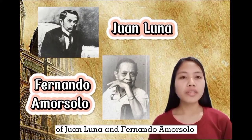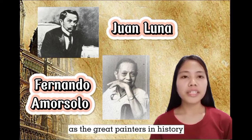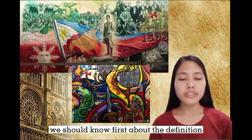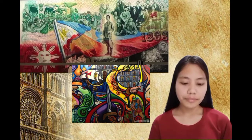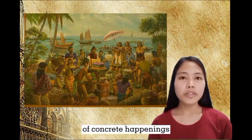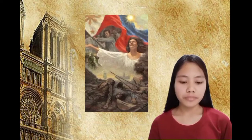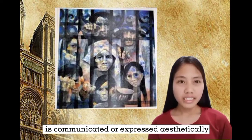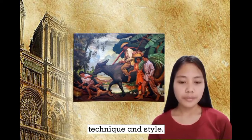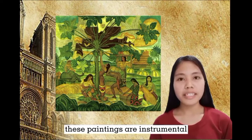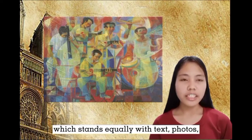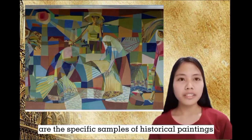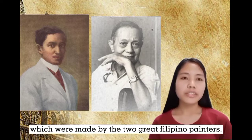Lesson 3 covers the works of Juan Luna and Fernando Amorsolo — two great painters in history — and tackles historical paintings. Historical paintings are visual representations of concrete happenings and the life of people in a specific period. Ideas about events and people are communicated aesthetically through art with form, technique, and style. These paintings are instrumental to the visualization of reality, standing equally with text, photos, caricatures, and films.